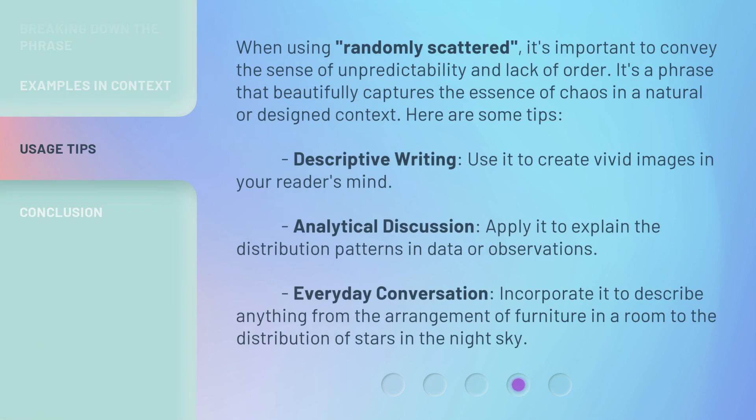When using 'randomly scattered,' it's important to convey the sense of unpredictability and lack of order. It's a phrase that beautifully captures the essence of chaos in a natural or designed context. Here are some tips: descriptive writing — use it to create vivid images in your reader's mind; analytical discussion — apply it to explain distribution patterns in data or observations; everyday conversation — incorporate it to describe anything from the arrangement of furniture in a room to the distribution of stars in the night sky.